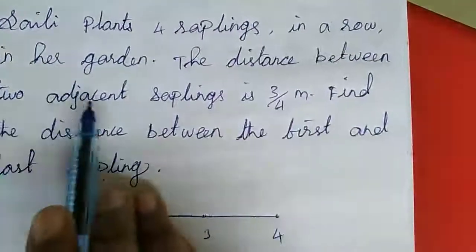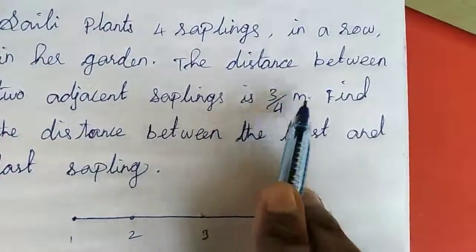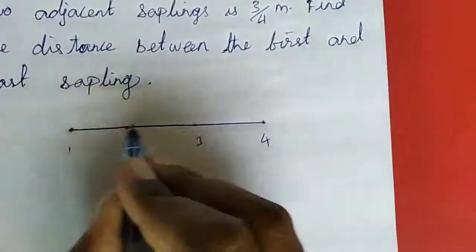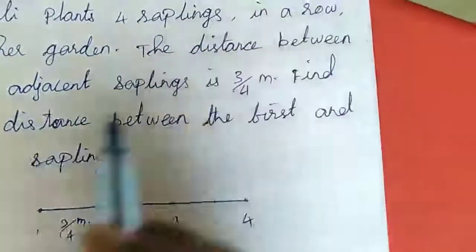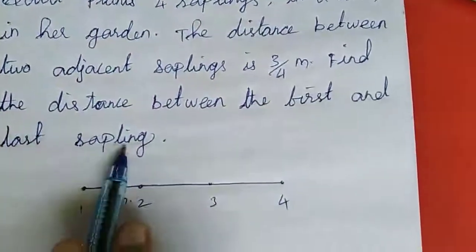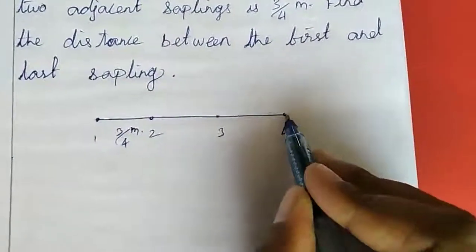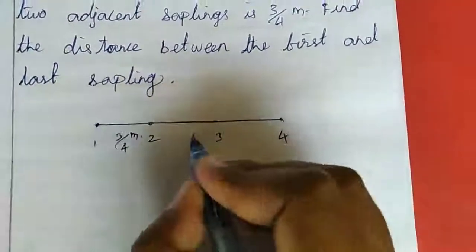The distance between 2 adjacent saplings is 3/4 meter. Find the distance between the first and last saplings.